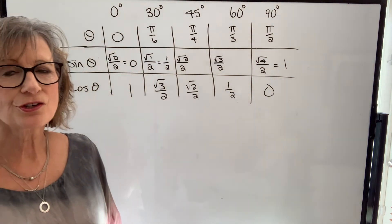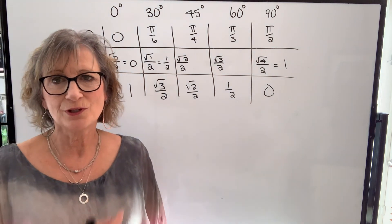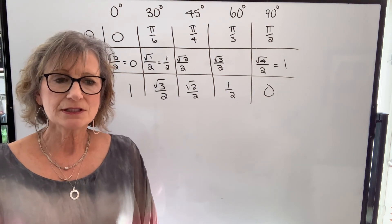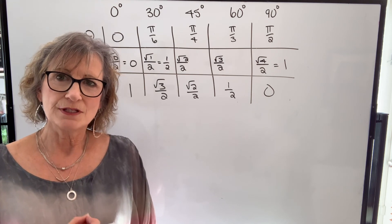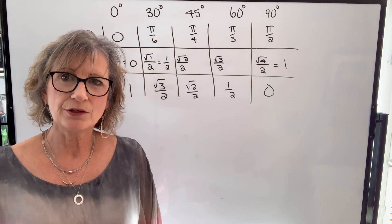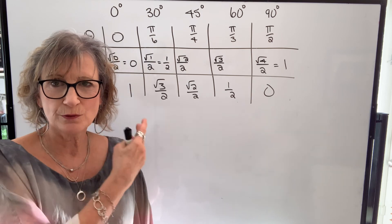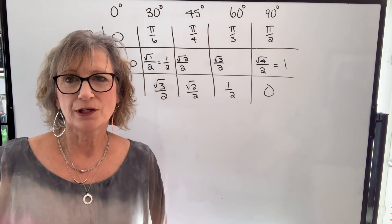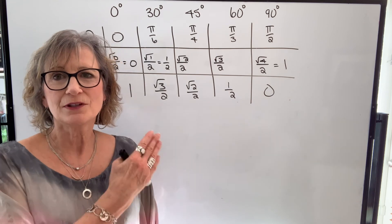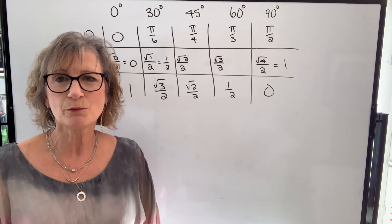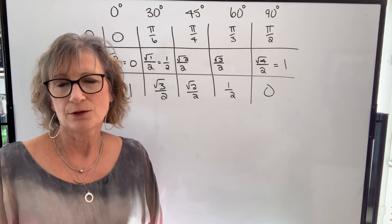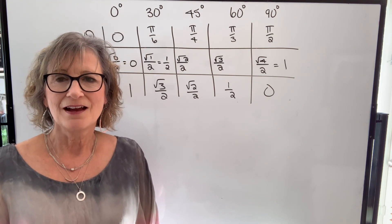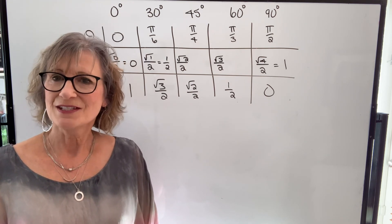Tangent — I'm going to talk about how you find that as a ratio when you know sine and cosine, but I'll do that when we discuss identities. For now we'll leave it at sine and cosine, since this is what we need for our unit circle, which I'll cover in the next video. All right, take care and we'll see you then.